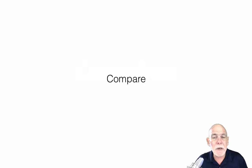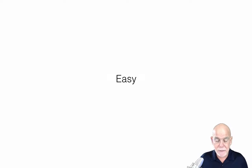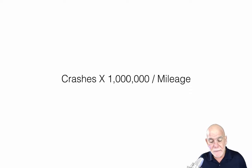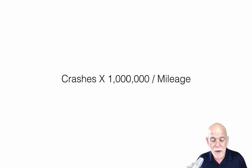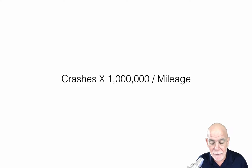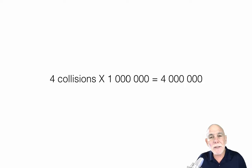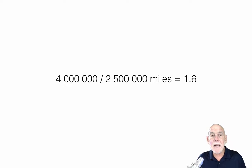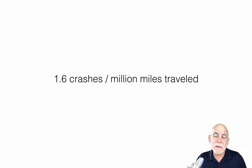I don't understand why more companies don't use crash rate to advertise. Anyway, it's easy to do. Here's the formula: crashes times a million, divided by your mileage. If you're a Canadian watching this, you've got to convert your kilometers to miles — it is mileage. Let's do an example: 4 crashes times a million equals 4 million, divided by 2,500,000 miles, and that equals 1.6.